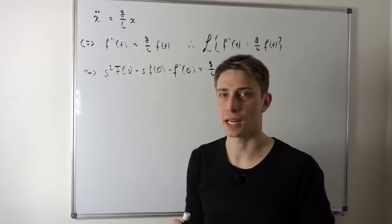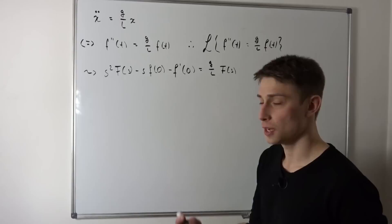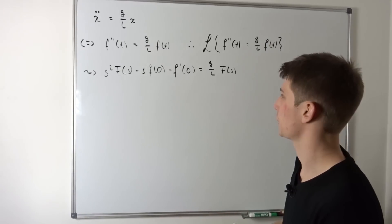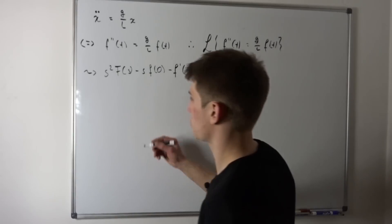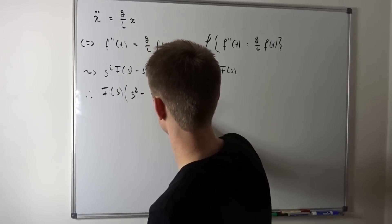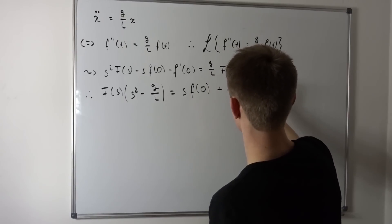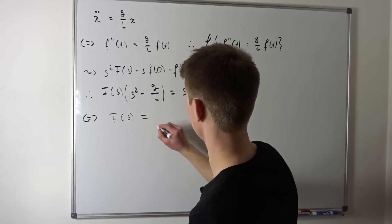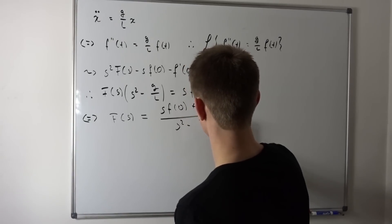Now we haven't discussed inverse Laplace transforms before, but this F(s) right here would be the solution to our differential equation, x in terms of t. So what we want to do is isolate F(s) on one side and bring all the other stuff to the other side. We subtract, factor out s² minus g/l, giving us F(s) · (s² − g/l) = s·f(0) + f'(0). Dividing through, F(s) = [s·f(0) + f'(0)] / (s² − g/l).